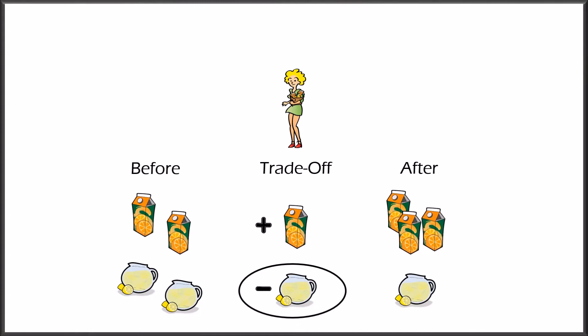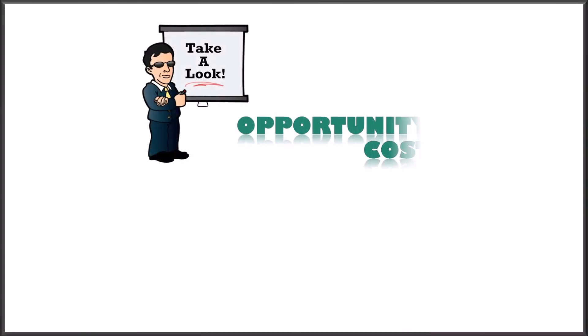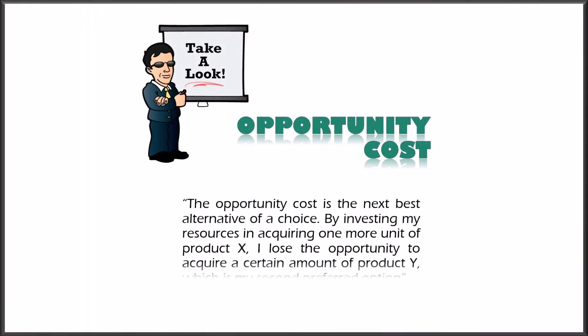We often try to isolate the effect of one event by assuming that all other important variables remain constant. We call this Ceteris Paribus, which can be translated as everything else stays the same. The opportunity cost is the next best alternative of a choice. By investing my resources in acquiring one more unit of product X, I lose the opportunity to acquire a certain amount of product Y, which is my second preferred option.